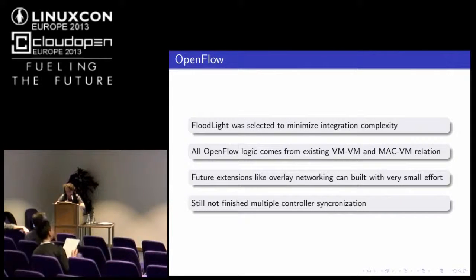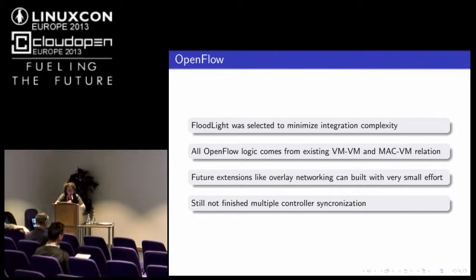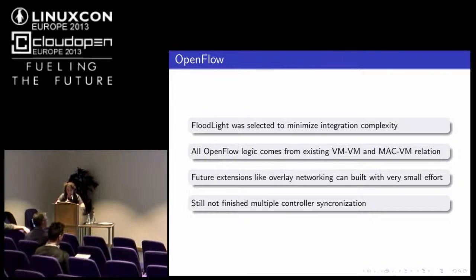We chose Floodlight because it was almost as major as OpenDaylight and it was simpler to provide an extension to work with our custom extension instead of OpenDaylight. It's hard to use POX or NOX because of their current architecture. We can build something like cross-IDC overlay networks in the future with very small effort — we just need to add some logic on top of the current one. We still haven't finished multiple controller synchronization, which means the OVS switch can be used with a set of controllers and in case of failure it can switch to another controller and the same rules will be pushed.